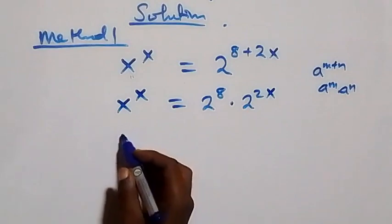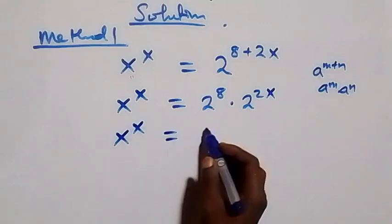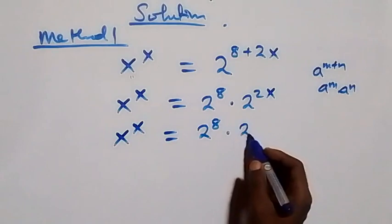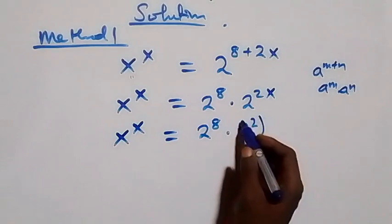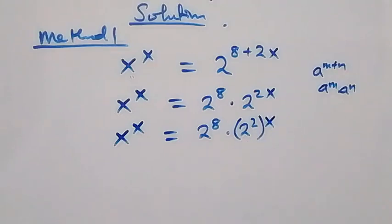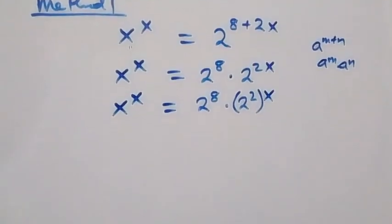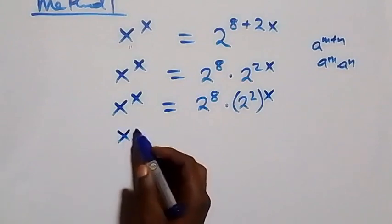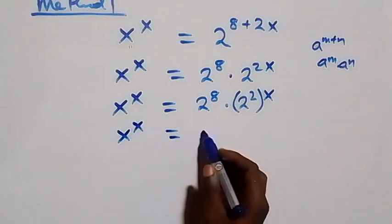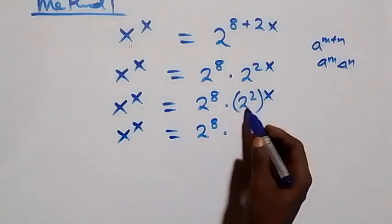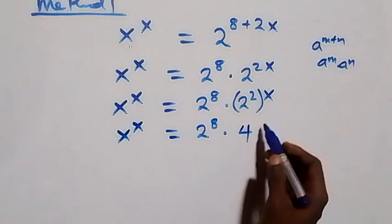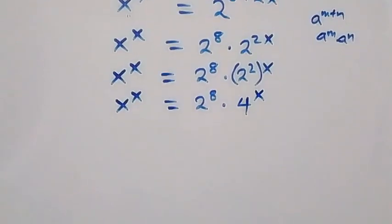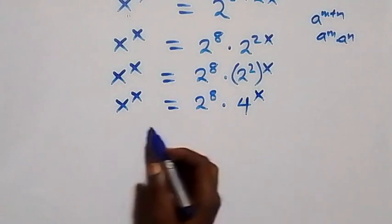This also implies x raised to power x equals 2 raised to power 8 times 2 squared, raised to power x. From the law of indices, we can write this as x raised to power x equals 2 raised to power 8 times 4 raised to power x, since 2 squared equals 4.